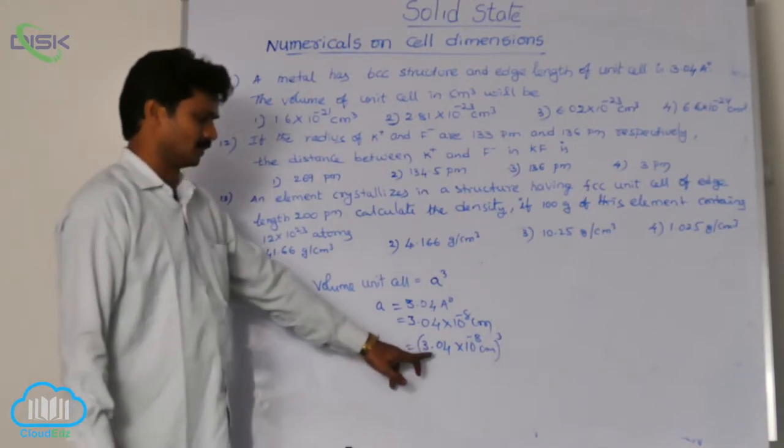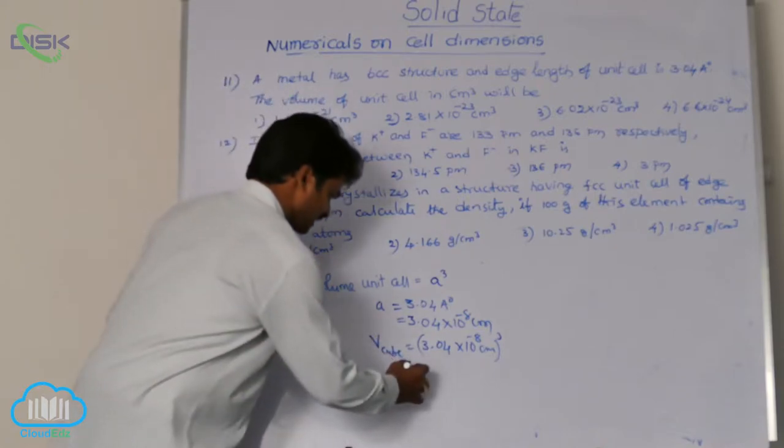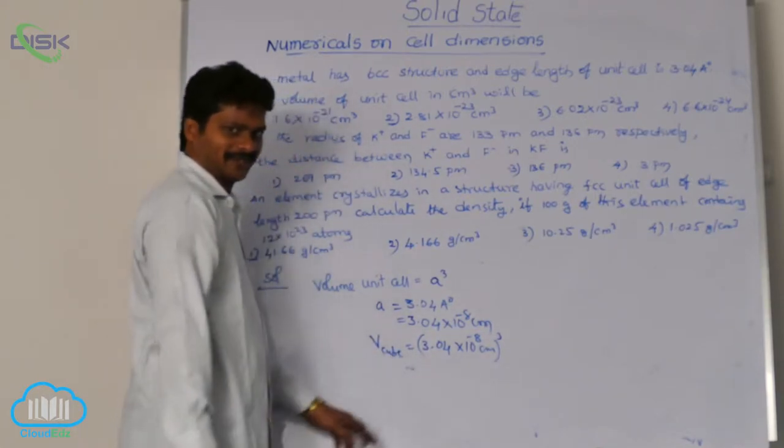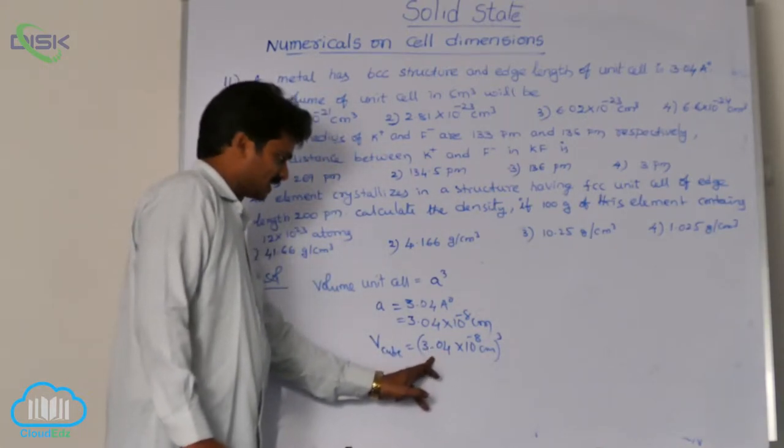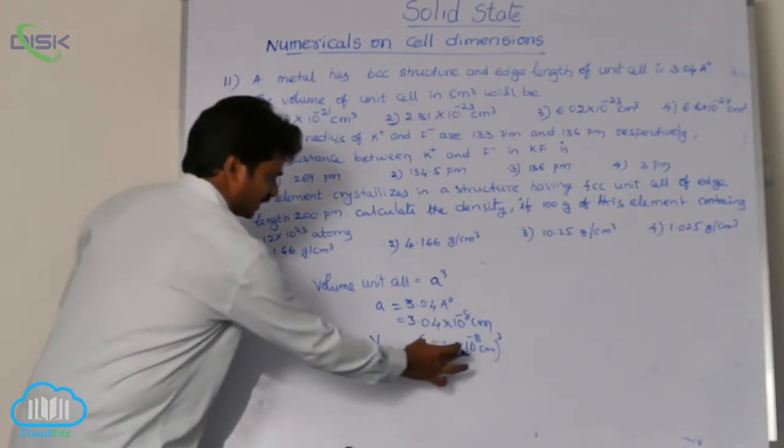That means 3 cube. It is nearly 3. So, let us calculate the rough value. It is nearly 3. 3 cube means 27 into 10 power minus